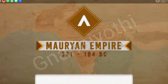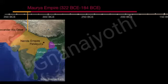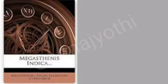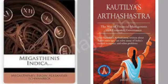For the first time in Indian history, by the 4th century BCE, a large empire was built in India under the Mauryas. The Mauryan empire politically unified a large part of the country. The two main sources of information on the Mauryan period are Indika by Megasthenes and Arthashastra by Chanakya.